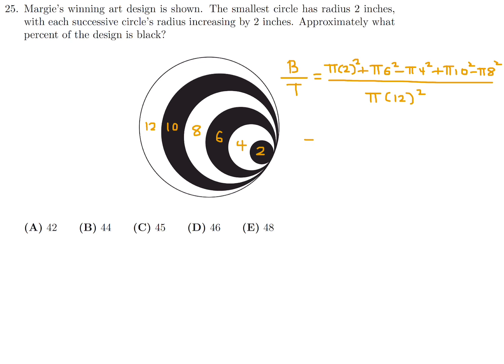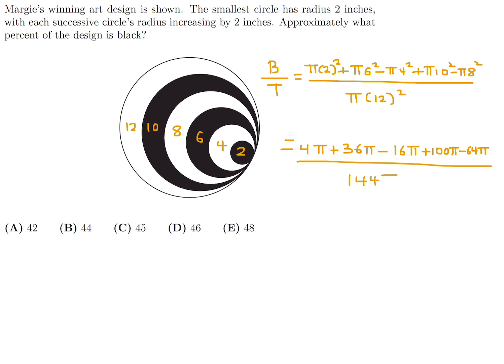So this looks like it's going to give me 4 pi plus 36 pi minus 16 pi plus 100 pi minus 64 pi. So the numerator looks like it will be 4 pi plus 20 pi plus 36 pi, all over 144 pi. And the numerator therefore becomes 60 pi, all over 144 pi. And then we can, of course, cancel out the pi's, and you just get 60 over 144. And that is approximately 42 percent. Therefore, number 25, the answer is A.